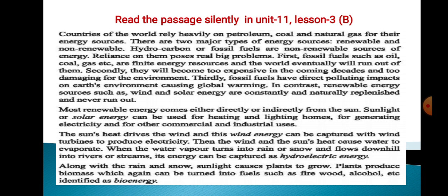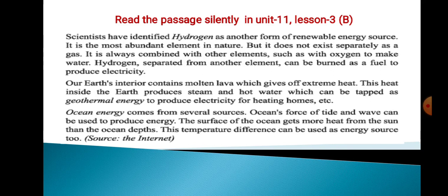Along with rain and snow, sunlight causes plants to grow. Plants produce biomass which can be turned into fuels such as firewood and alcohol, identified as bioenergy. Scientists have also identified hydrogen as another form of renewable energy source. It is the most abundant element in nature but does not exist separately as a gas. It is always combined with other elements, such as with oxygen to make water. Hydrogen separated from another element can be burned as a fuel to produce electricity. Our earth's interior contains molten lava which gives off extreme heat, producing steam and hot water — this is geothermal energy, used to produce electricity and for heating homes.